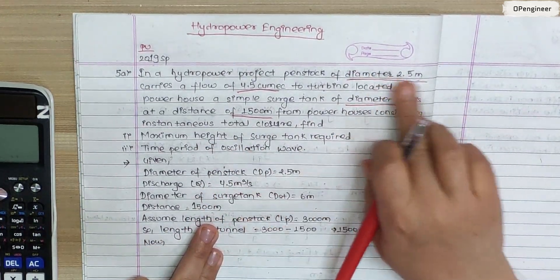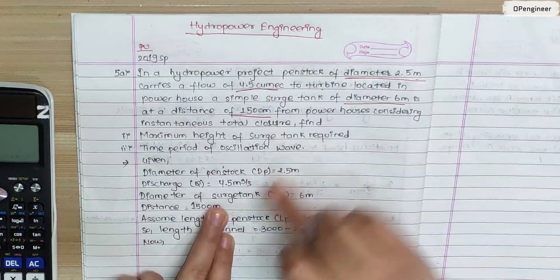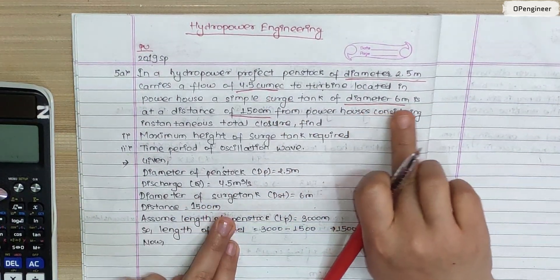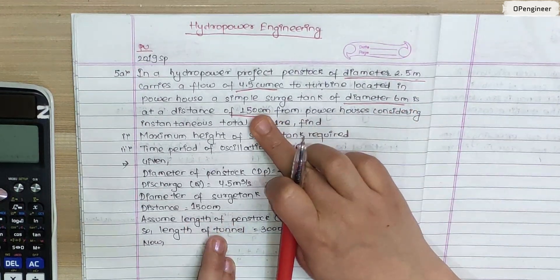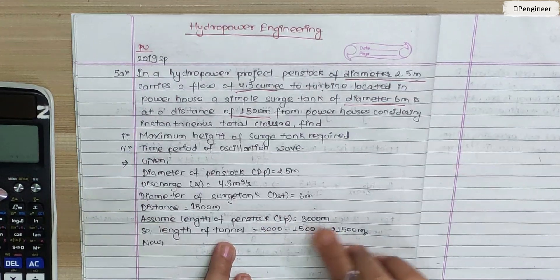So in question, we have diameter of penstock 2.5 meter, discharge 2.5 meter cube per second, diameter of surge tank 6 meter, distance 1500. Let's say length of penstock is assumed 3000 meter.